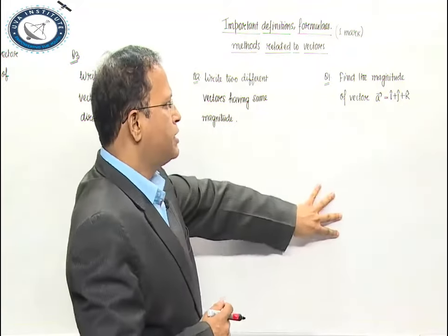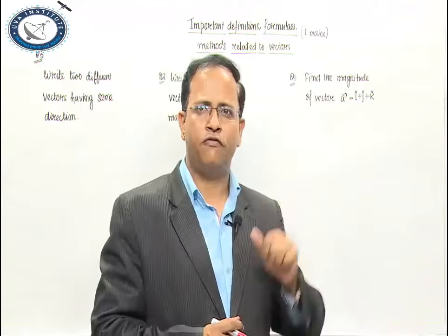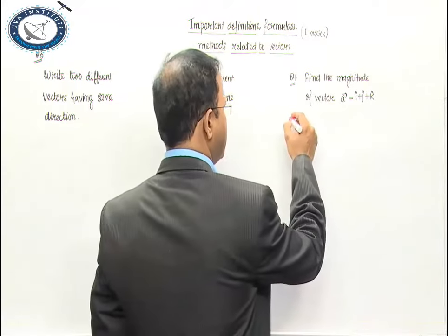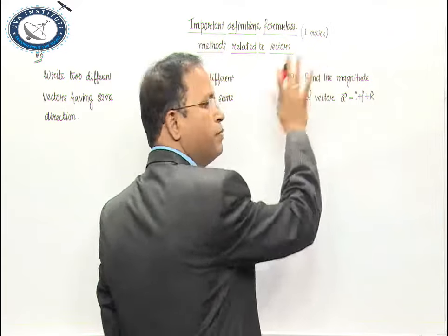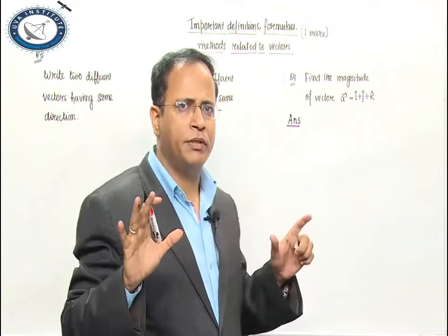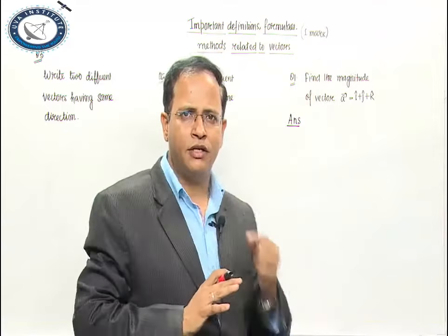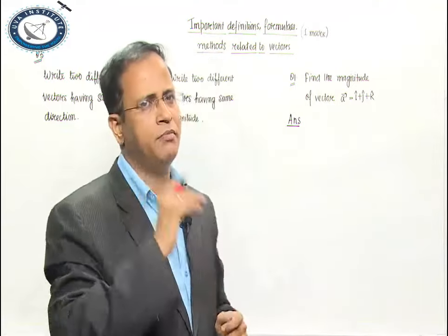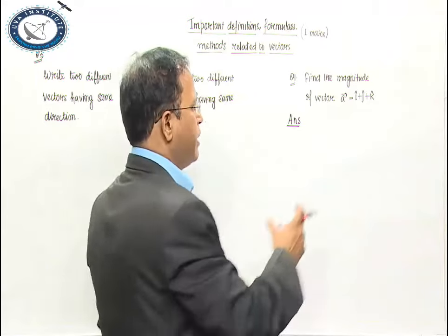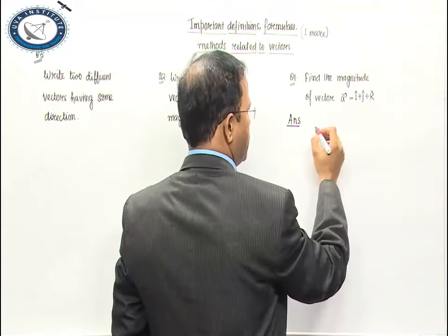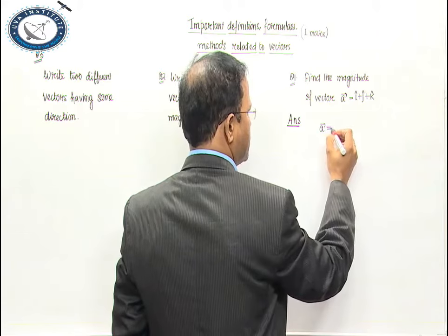Now first of all, we will talk about the magnitude of the vector. When we talk about the magnitude of the vector, I will give you simple formulas and direct applications, because it is a one-marker question. If you have any vector, say vector A, the magnitude is computed from its components.